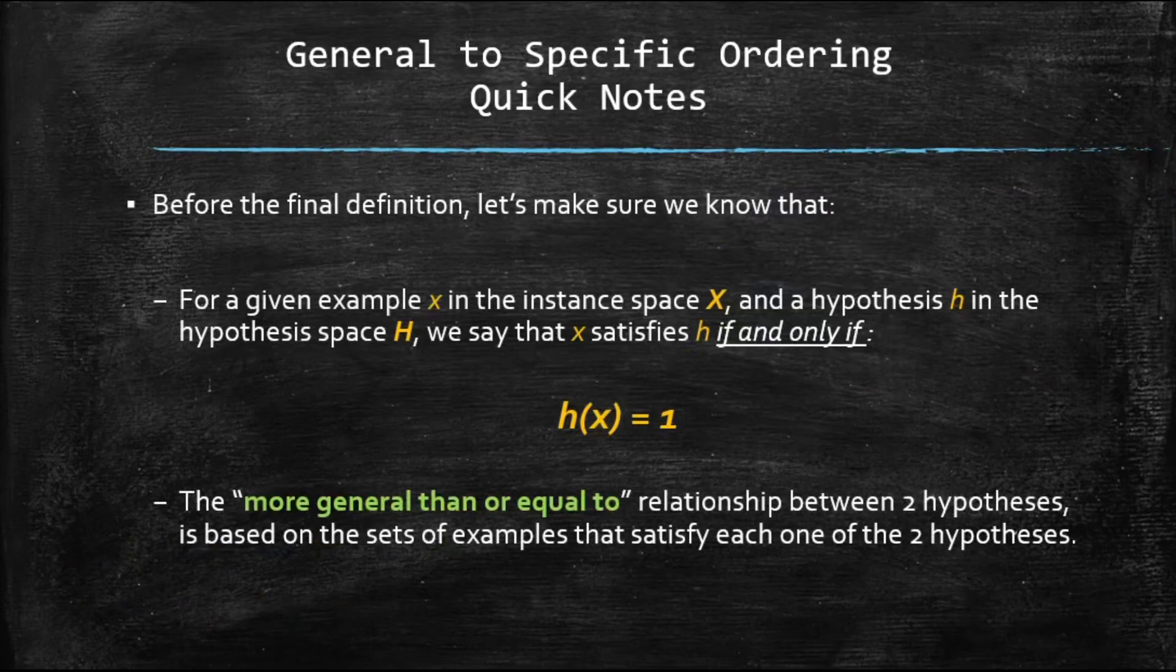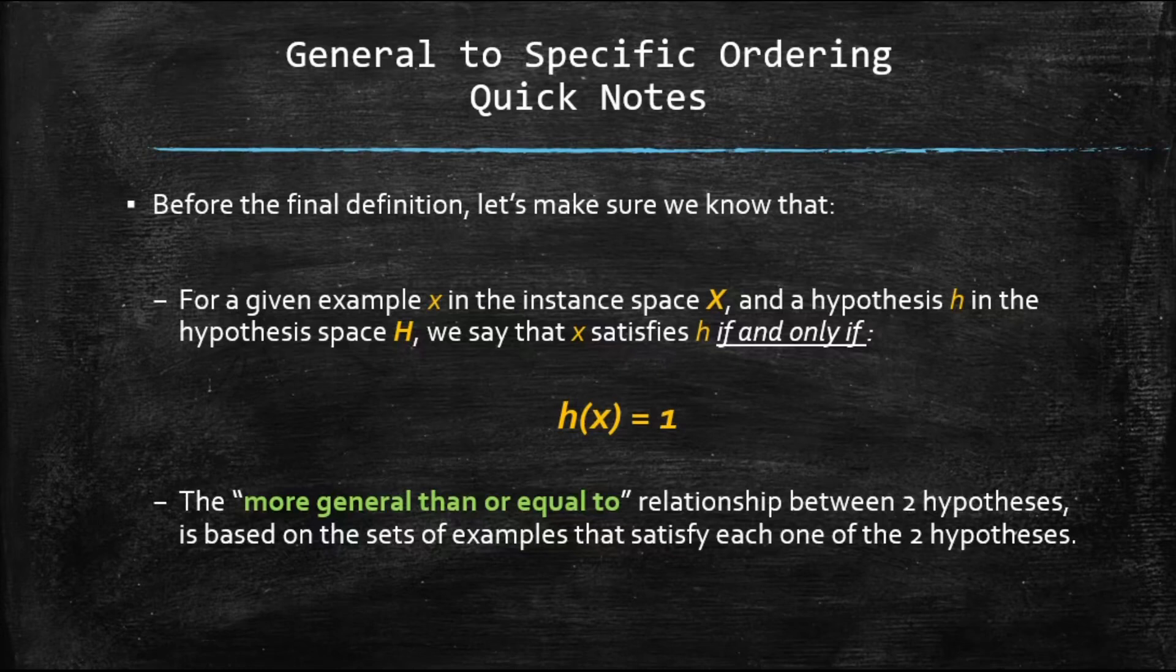Before we go through the formal introduction of this idea of more general than or equal to between two hypotheses, we have to just remind ourselves of two important things. Number one, for a given example x in your instance space, and a given hypothesis h in your hypothesis space, we say that x satisfies your hypothesis if and only if h of x equals one, meaning that if you consider the values of your example and look at your hypothesis, each value will satisfy its corresponding constraint. The hypothesis would be satisfied, and that is how we show it, we say h of x equals one.